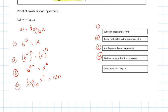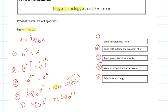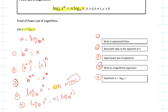Now, what do we know about w? Looking back, w is equal to log base b of x. So I'm going to replace w with log base b of x. That gives log base b of x to the power of n equals n times log base b of x. That proves the power law of logarithm. The key steps were converting from logarithmic form to exponential form and then back again.